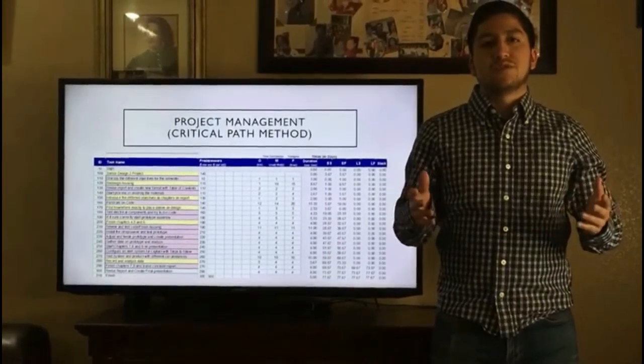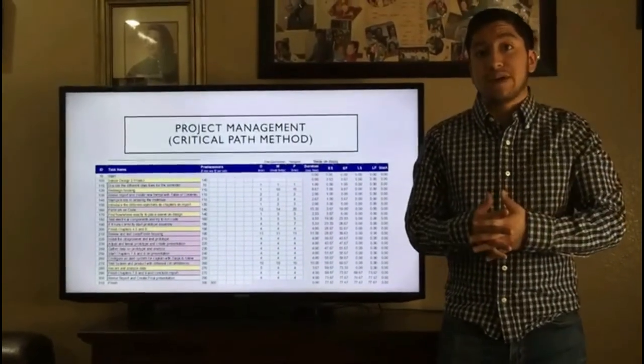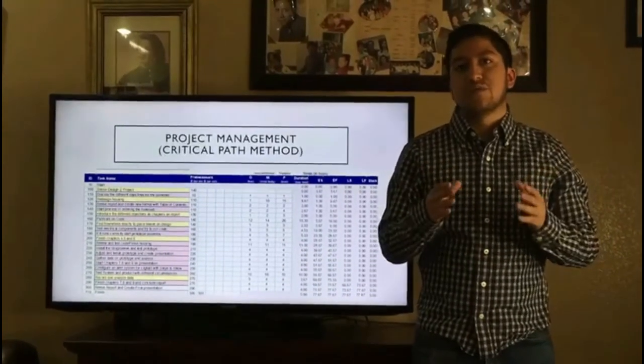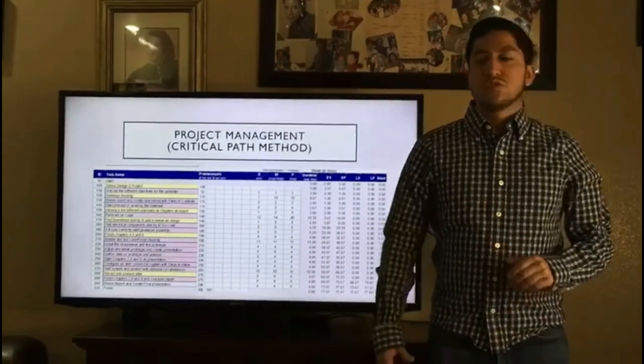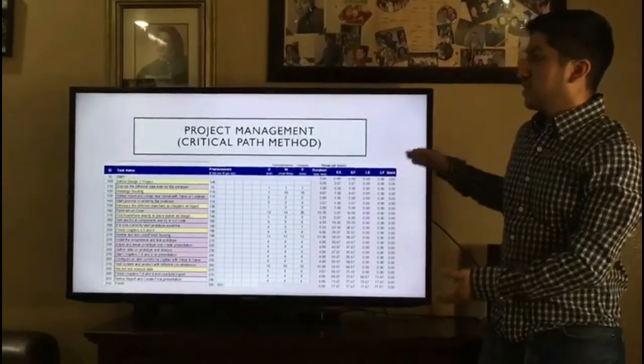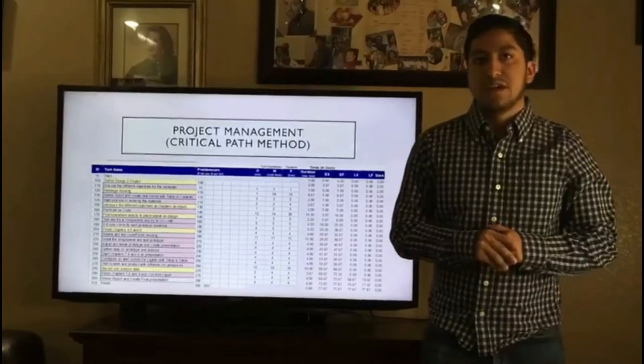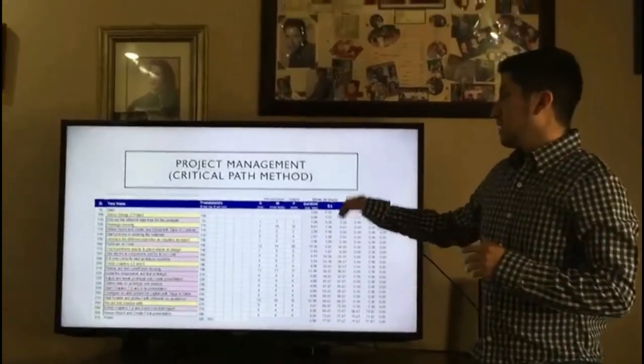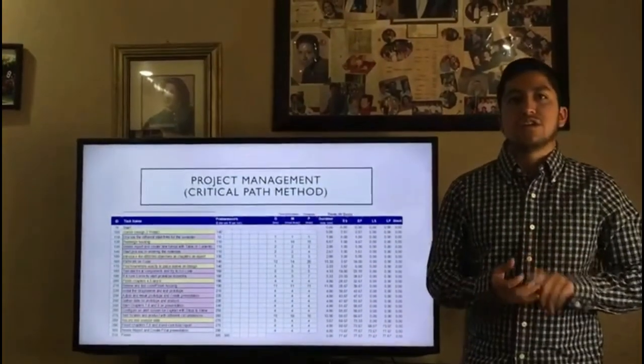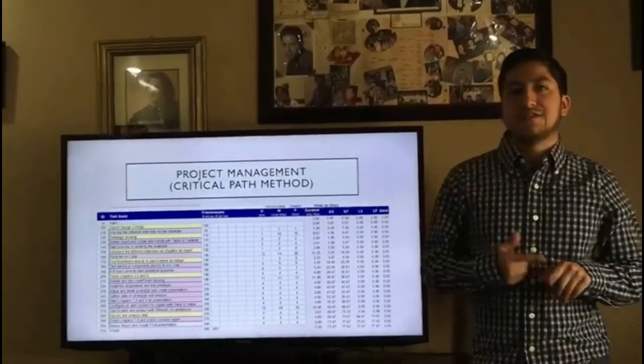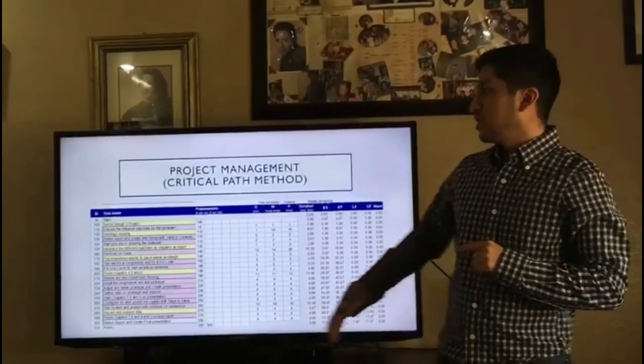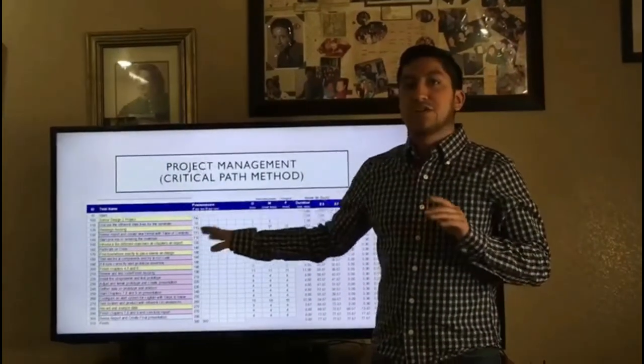To map out our semester, we had to make a critical path to see what's the best way we can reach our goal to create the prototype. For the critical path method, this was the table we obtained. It includes the slack, early finish, early start, late start, and late finish. It also includes the predecessors.